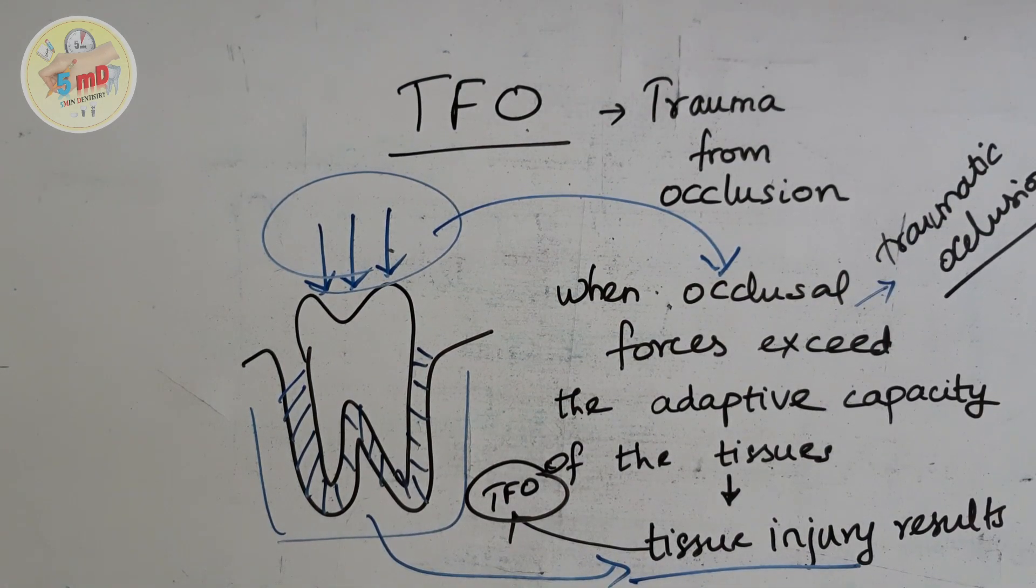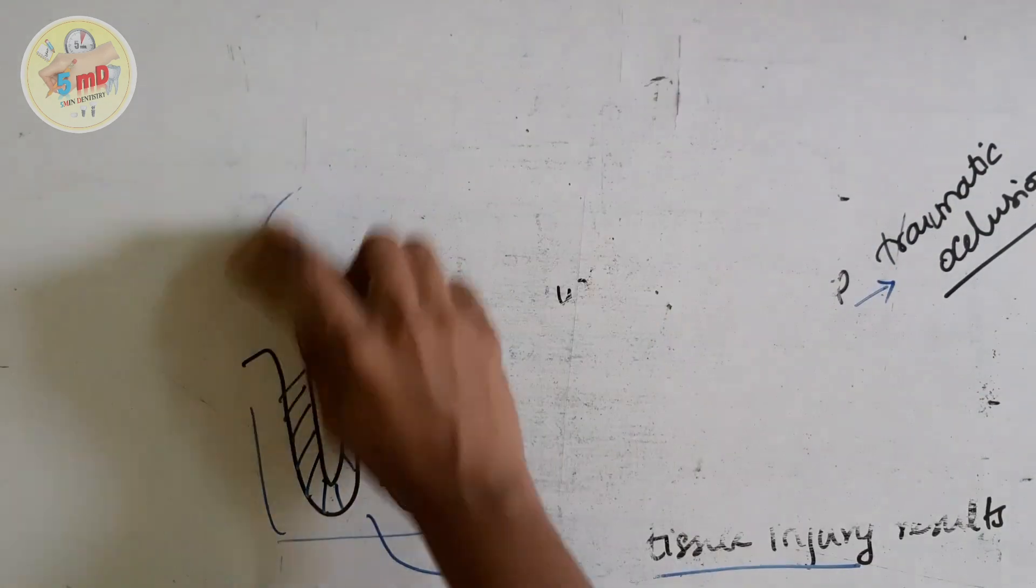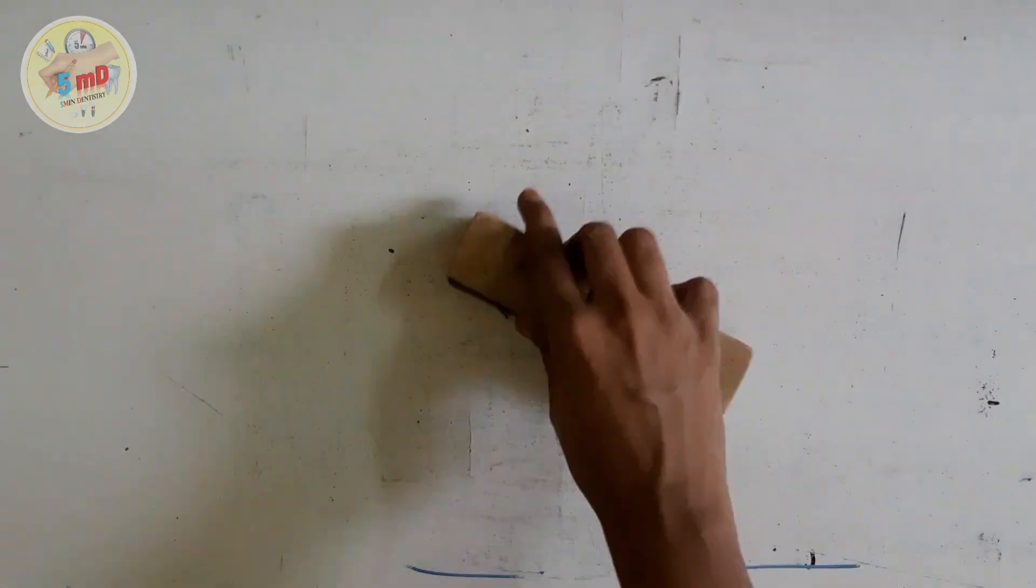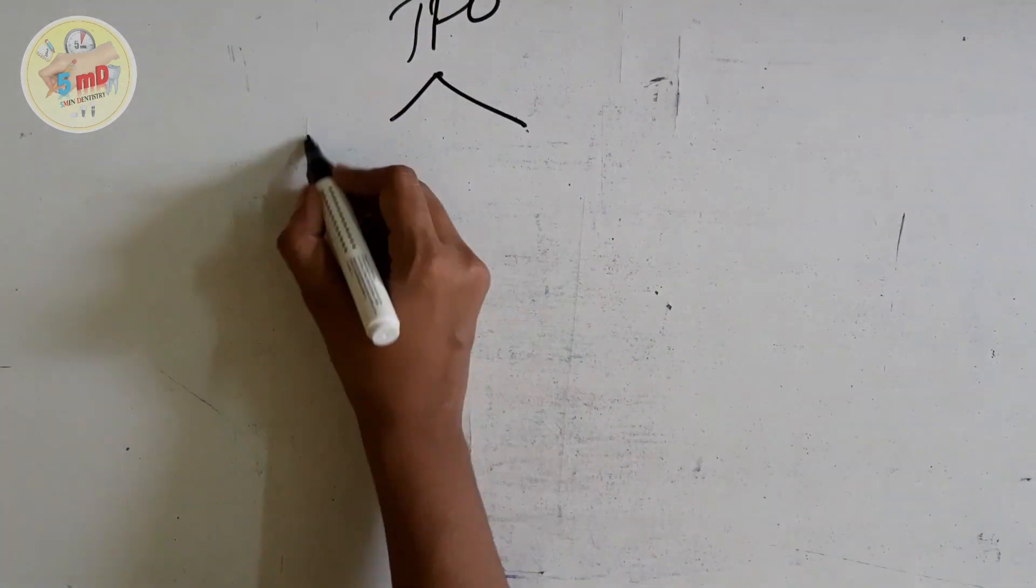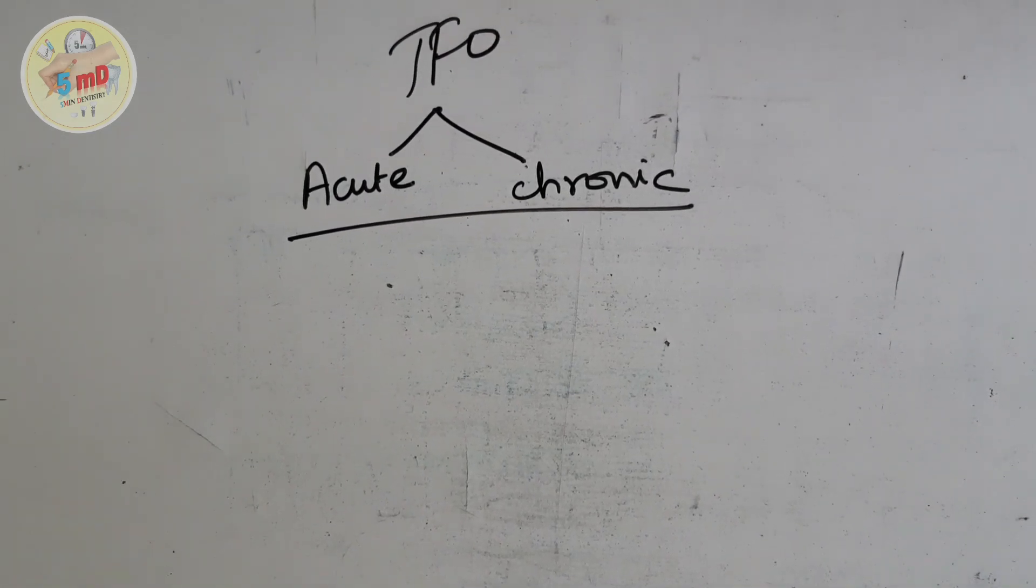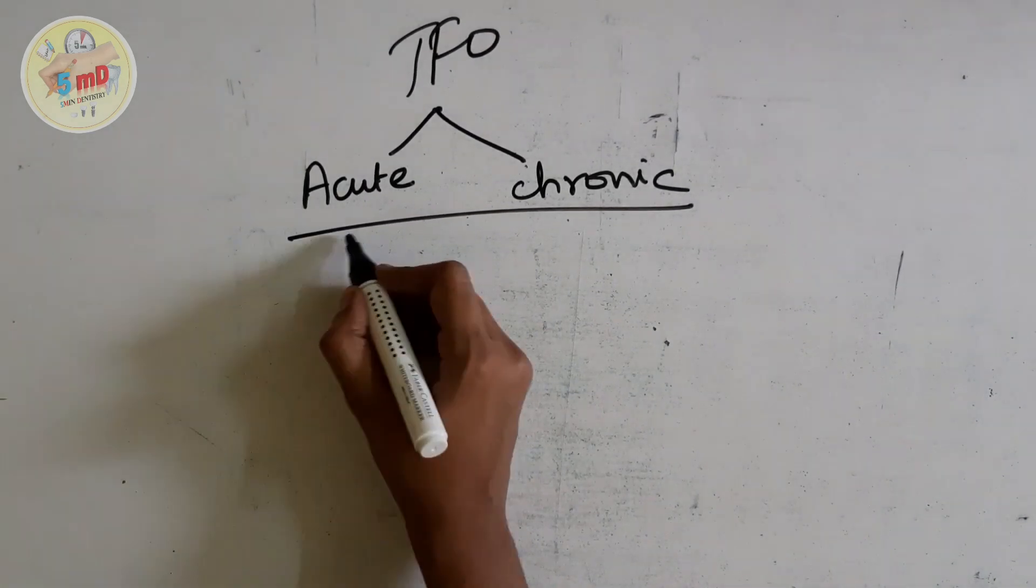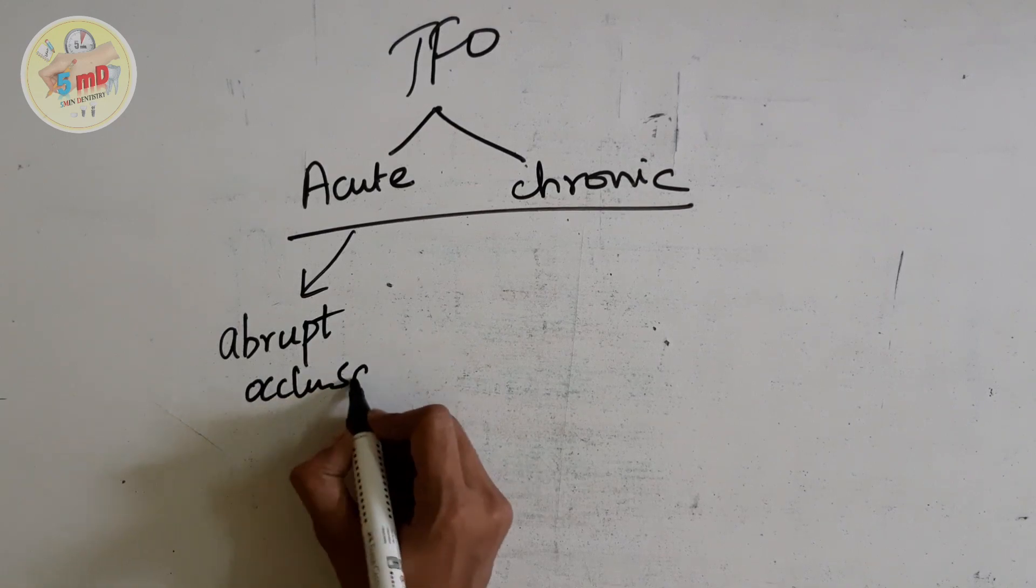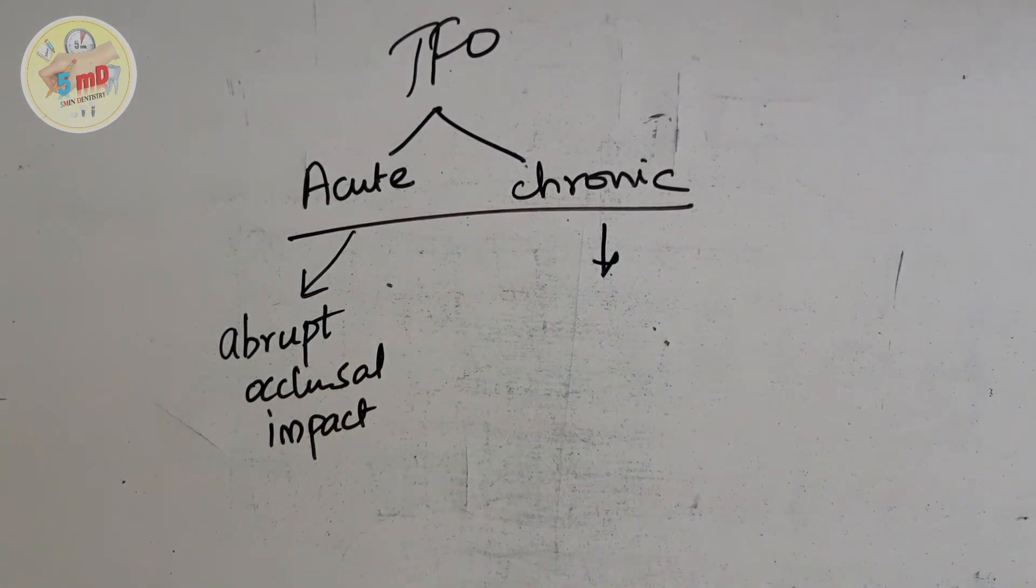The direction of the force and the amount of force can also be responsible for this trauma from occlusion. The TFO can be classified into acute and chronic. In acute TFO, we have an abrupt occlusal impact, such as biting on a seed for example.